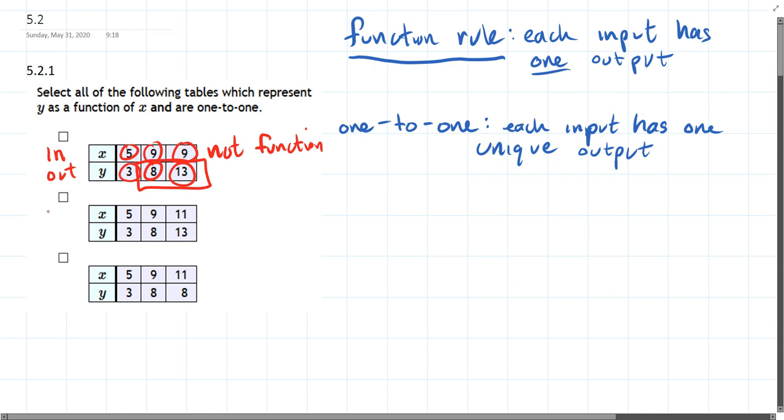Now just quickly looking at the other two, we have three inputs that are all different, three inputs that are all different. As long as they each have an output, which they do, they're all going to be functions. So this is a yes function, meaning it is a function. And the other one is yes a function.